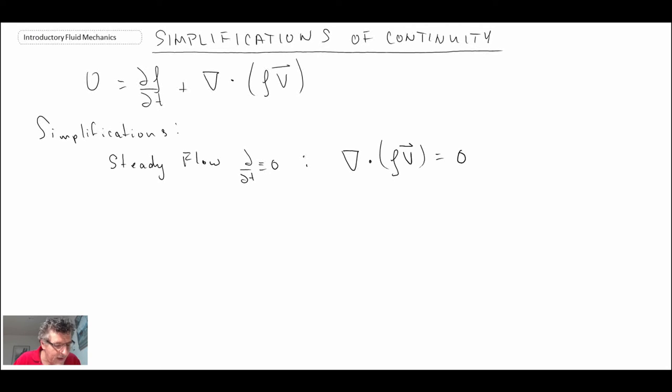If we have an incompressible flow, we know for incompressible, density is equal to a constant. If density is equal to a constant, the time rate of change of density will be zero. So what we then end up with is del dot v equals zero.